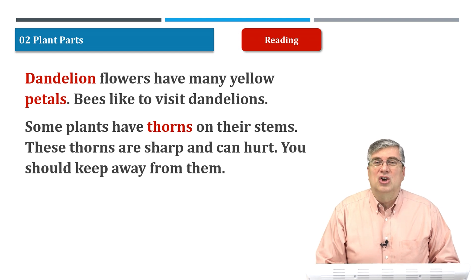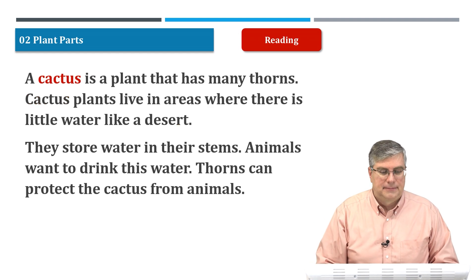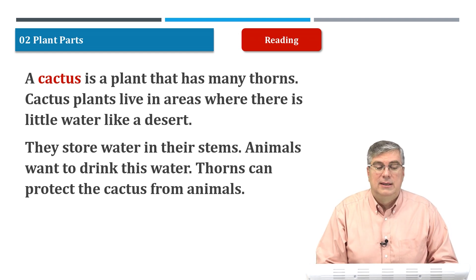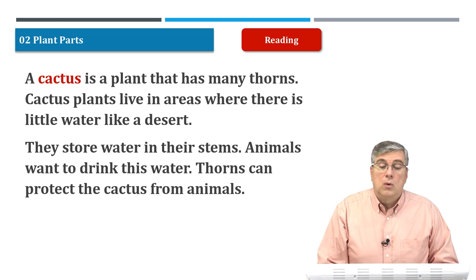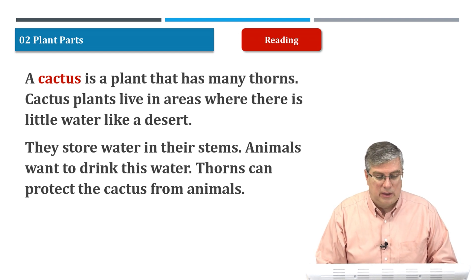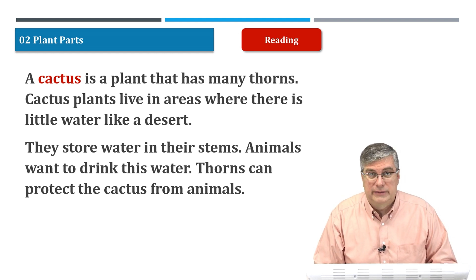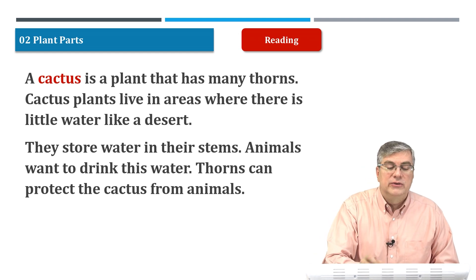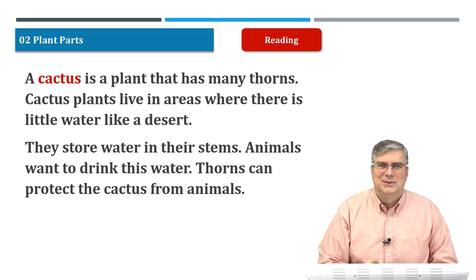Some plants have thorns on their stems. These thorns are sharp and can hurt. You should keep away from them. A cactus is a plant that has many thorns. Cactus plants live in areas where there is little water, like a desert. They store water in their stems. Animals want to drink this water, but thorns protect the cactus from animals.